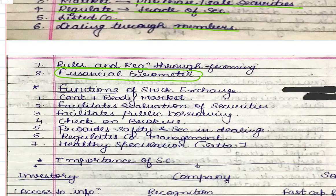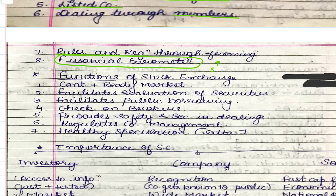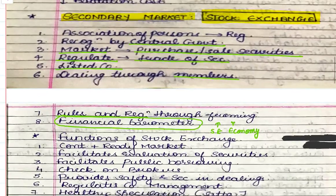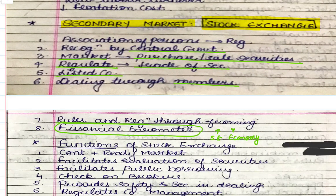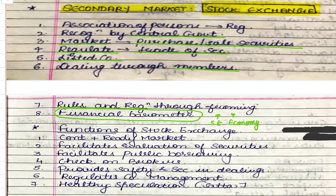Financial barometer kya matlab hai bhaiya? Desh ki economy rise karti hai toh stock exchange bhi rise karta hai; if the economy is declining, the stock exchange falls too. Two big stock exchange examples: Sensex and Nifty. Nifty is the index of National Stock Exchange and Sensex is the index of Bombay Stock Exchange. So when Sensex and Nifty rise, this means that the country's prominent 30 companies in case of Sensex, and 50 companies in case of Nifty, these companies are performing good.